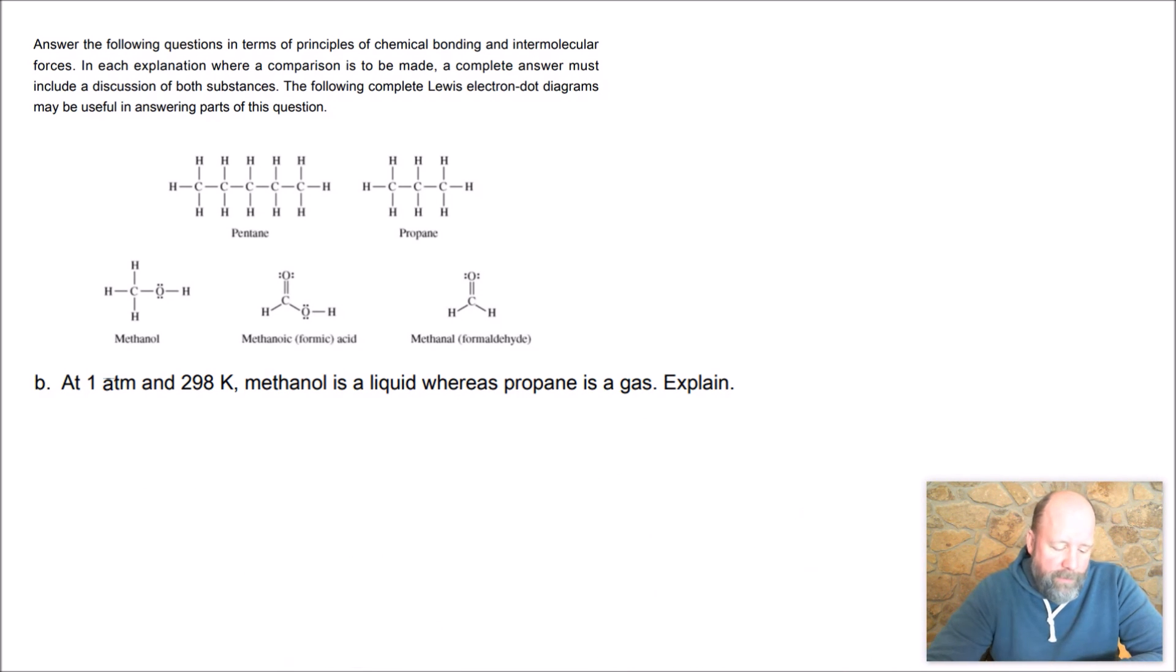So I got another intermolecular forces question with part B here. Only this time we're looking at methanol versus propane. And we can see even though methanol is a lot smaller, and therefore London dispersion forces are smaller, we've got an oxygen-hydrogen bond here, which means that's a polar bond, which means we can do hydrogen bonding.